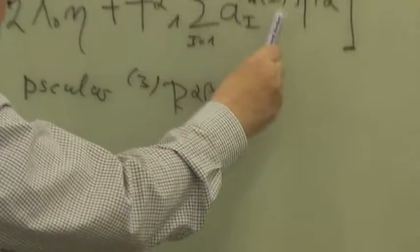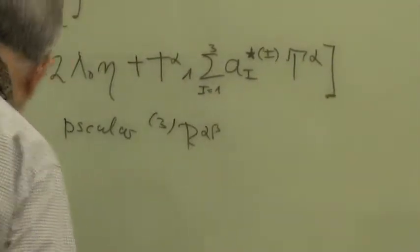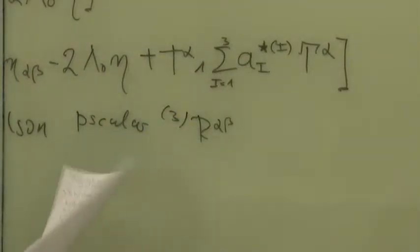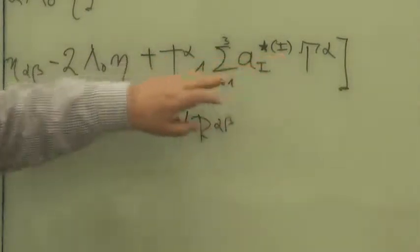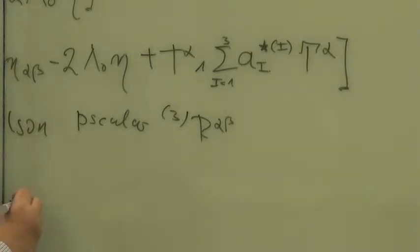We can also have torsion-square pieces, but now the rule which I explained to you is no longer valid for the odd case. For the even pieces we always had T1 wedge star-T1 plus T2 wedge star-T2. This is no longer valid, and one has to use computer algebra or do it by hand.